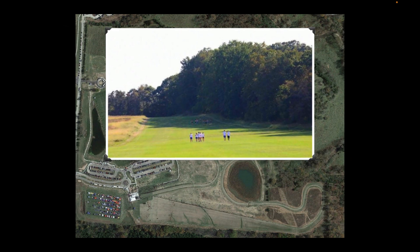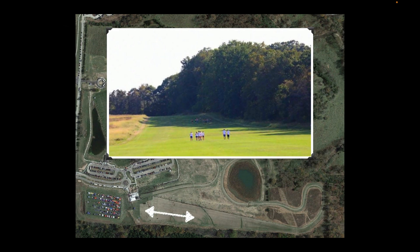One thing to note about the scale: the distance down that straightaway is 500 meters. A lot of times in a cross-country course, we're not used to such a long straightaway on the start and also such a wide course the whole way down. We'll talk about that more when we look at each kilometer separately.